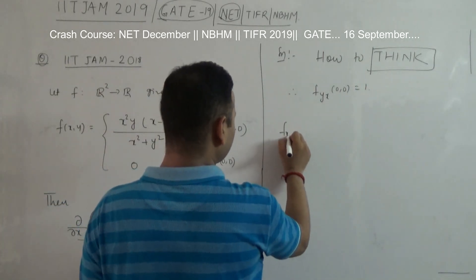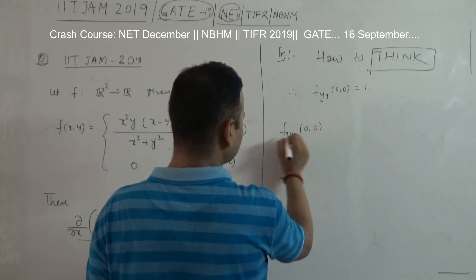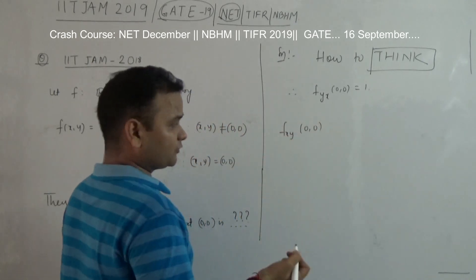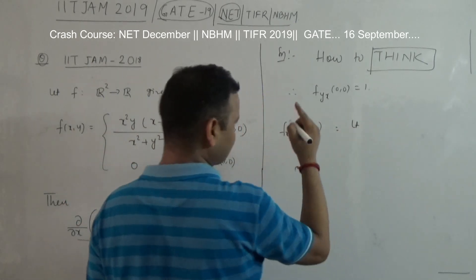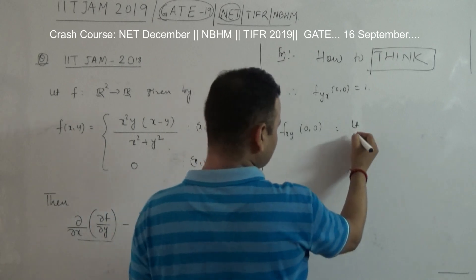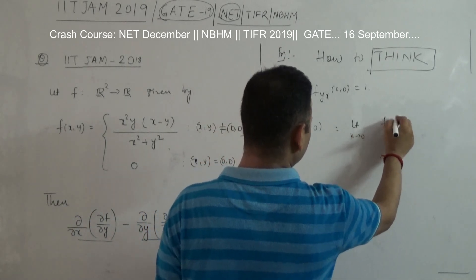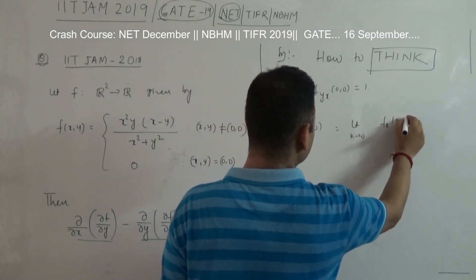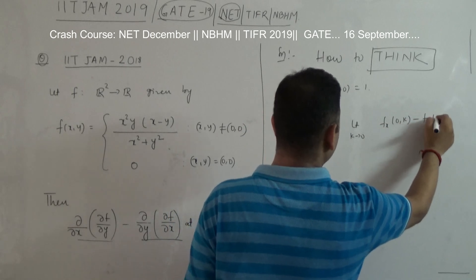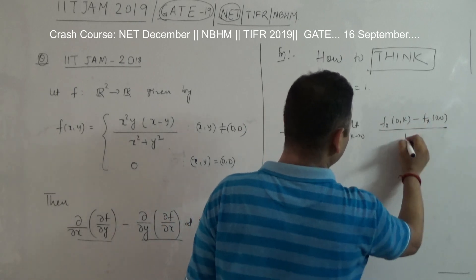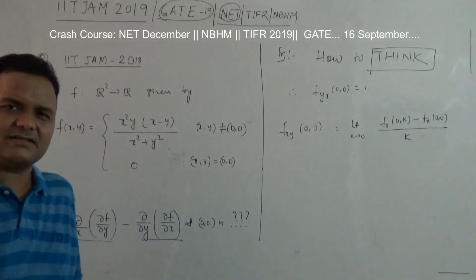Next we have to find f_xy at (0, 0). So this is nothing but the limit as k tends to 0 of [f_x(0, k) minus f_x(0, 0)] divided by k. And f_x(0, k) is the limit as h tends to 0 of [f(h, k) minus f(0, k)] divided by h. This is very simple.